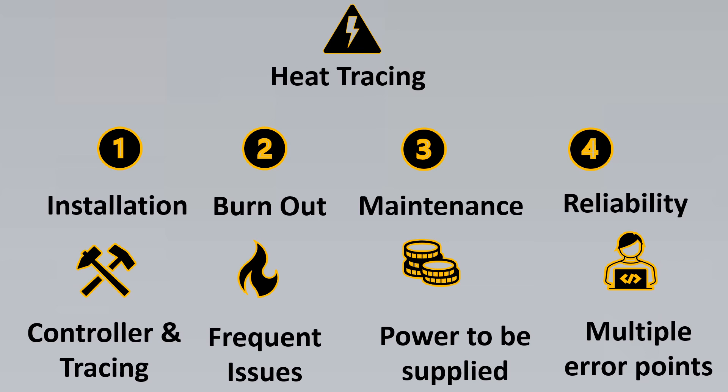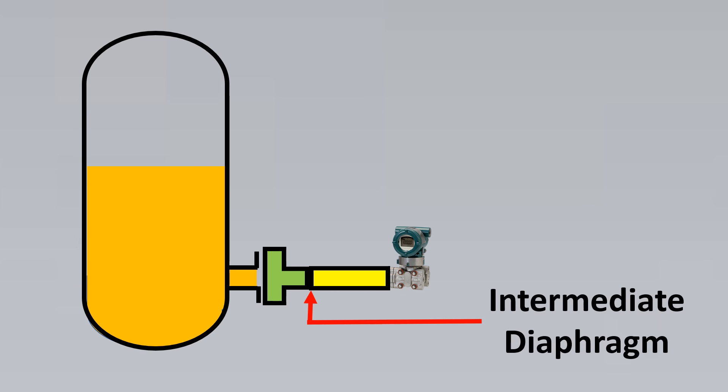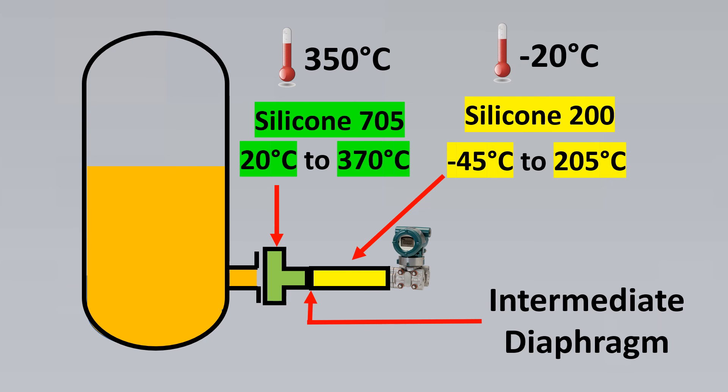In order to avoid these issues, Emerson has come up with a very innovative product where it uses the best of both the fill fluids. And they have put an intermediate diaphragm in between. So what happens is the first fill fluid is Silicon 705 which has the temperature range from 20 degrees Celsius to 370 degrees Celsius. So this is used to satisfy the higher process temperatures. For our case it was 350 degrees Celsius. And the next fill fluid which is Silicon 200 satisfies the ambient condition which is minus 20 degrees Celsius. And the intermediate diaphragm seal in between keeps the pressure transferring from one side to the other side.